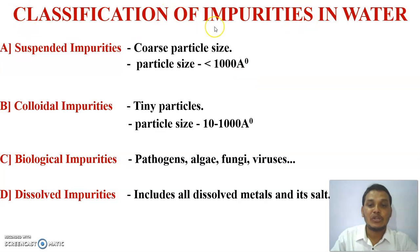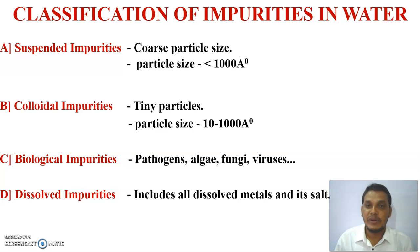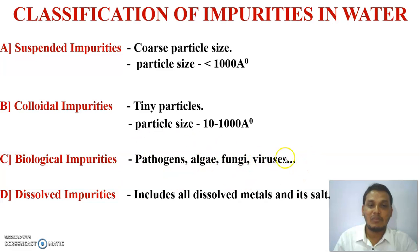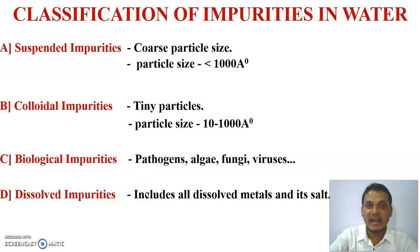To summarize the classification of impurities: suspended impurity has a particle size greater than 1000 angstroms; colloidal impurity has a particle size between 10 to 1000 angstroms; biological impurities include algae, fungi, bacteria, small aquatic animals, microbiological viruses, and pathogens; and dissolved impurities include either dissolved salts or dissolved gases.